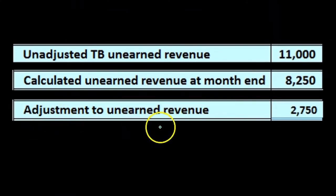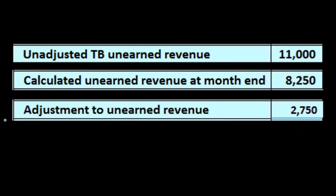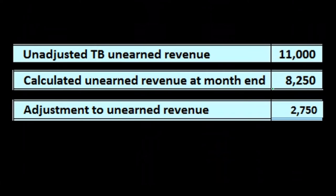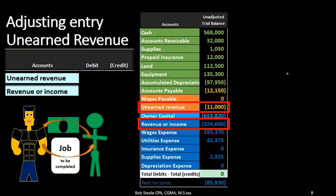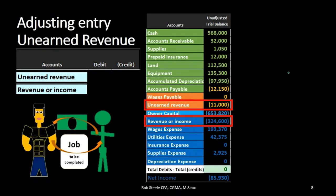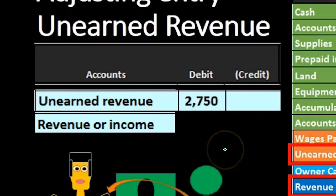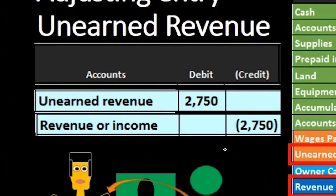We take the difference and get $2,750, meaning the $11,000 needs to go down by $2,750 to end up with the amount that we were told is still unearned of $8,250. We already see our journal entry — we just plug the numbers in. We're going to debit unearned revenue by $2,750 and credit revenue by $2,750. Let's post that out and see what happens.